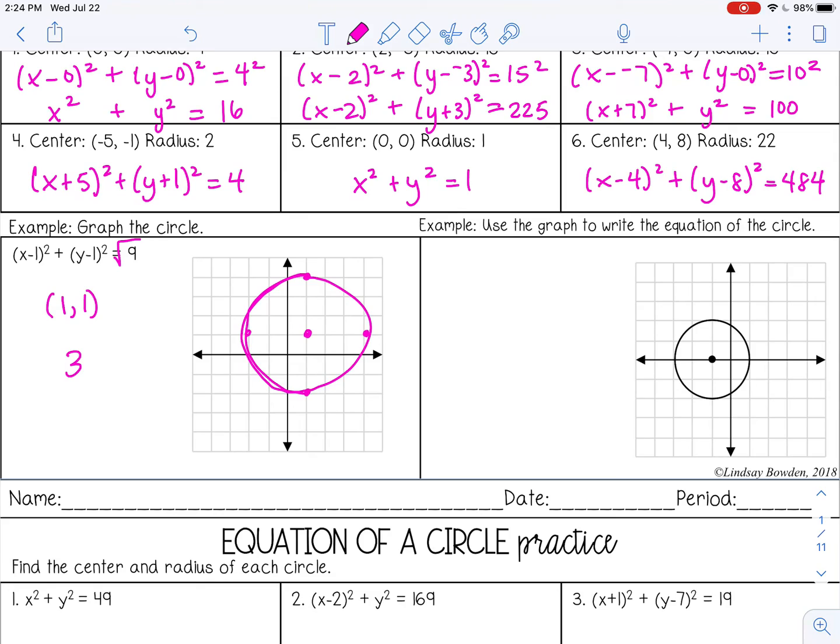All right, and then in the last example, we are given a graph and we need to work backwards and write the equation. So let's write the center point first. It's (-1,0). And then my radius is 2. All right, so my equation would be x plus 1 squared, 0, so just y squared. And then equals my radius squared, so 4. All right, you can stop the video now and go ahead and complete the practice and check it with your teacher.